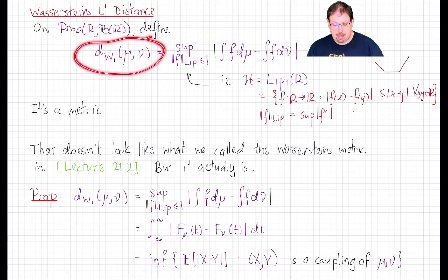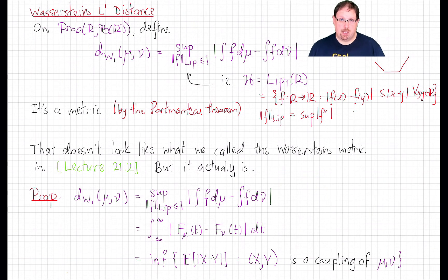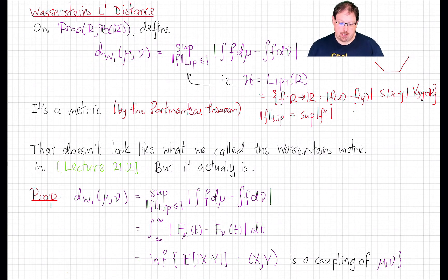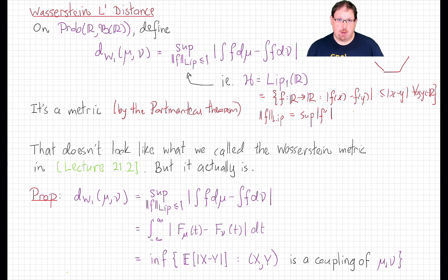Now this dual metric is indeed a genuine metric. One way to see that is to use the Portmanteau theorem for equivalent formulations of weak convergence. Since weak limits are unique, we get separation of points from this metric, since weak convergence can be described in terms of testing against Lipschitz functions. Lipschitz functions are not necessarily bounded, so this is not automatically a weaker notion of convergence than total variation. If you add the bounded constraint and only take the supremum over bounded Lipschitz functions whose bound is also at most 1, it's a theorem that that metricizes weak convergence on the real line.